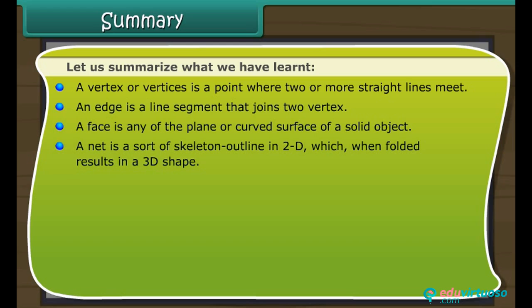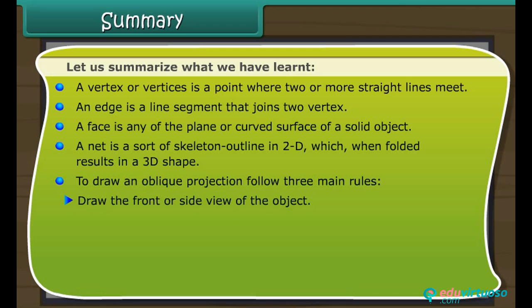A net is a sort of skeleton outline in 2D which, when folded, results in a 3D shape. To draw an oblique projection, follow three main rules. One, draw the front or side view of the object.